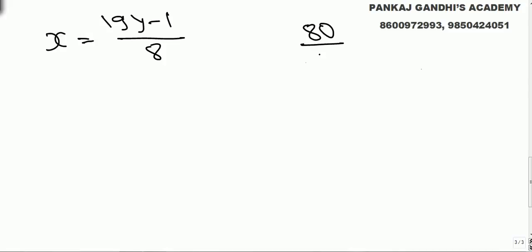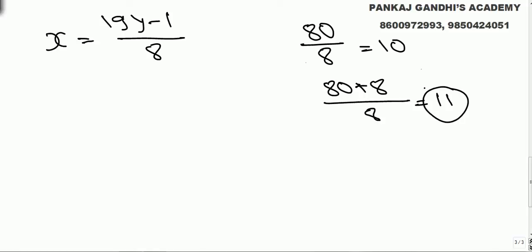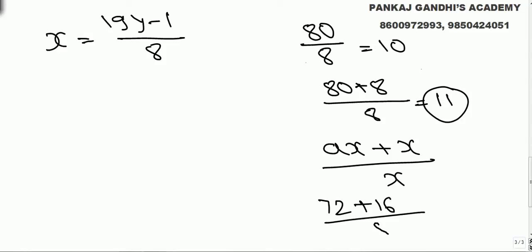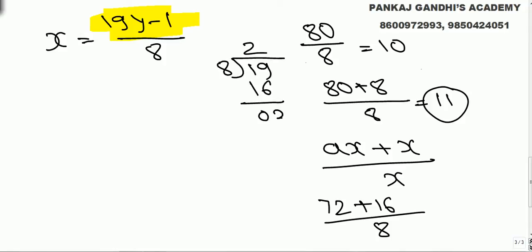Now for the smart approach: we need x = (19y - 1) / 8, meaning 19y - 1 must be divisible by 8. The concept is: if 80 is divisible by 8, then 80 plus any multiple of 8 is also divisible by 8. More generally, if ax is divisible by x, then ax plus any multiple of x will always be divisible by x. So we need 19y - 1 divisible by 8. The nearest multiple of 8 to 19 is 16, so we rewrite 19y - 1 as 16y + 3y - 1.